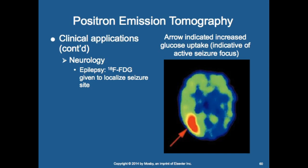For neurology and epilepsy, FDG is given to localize seizure sites. The arrow indicates increased glucose uptake in the area of seizure focus.